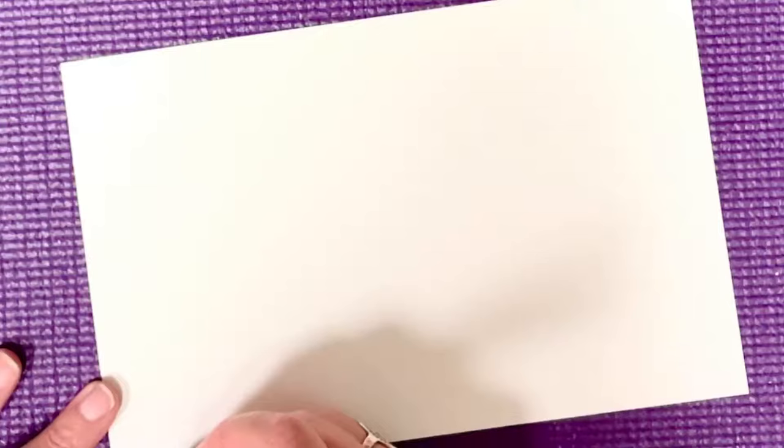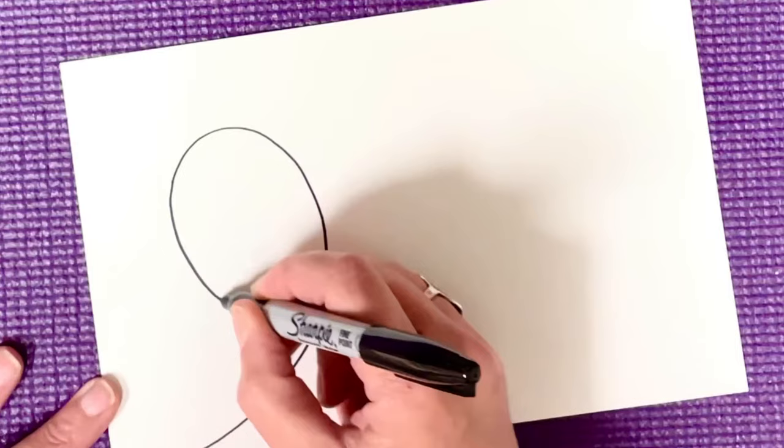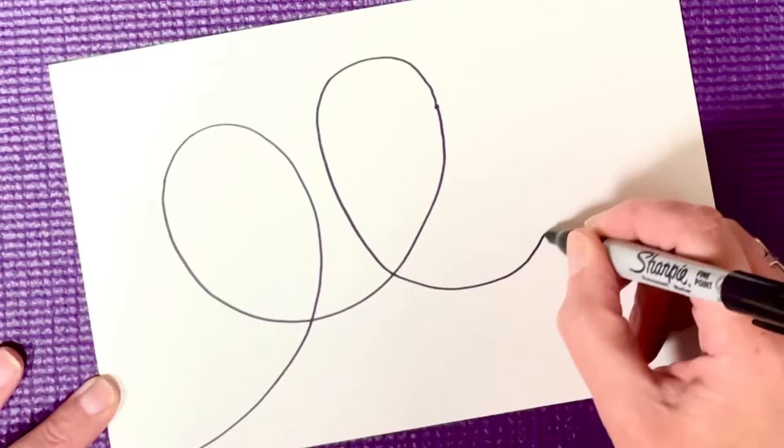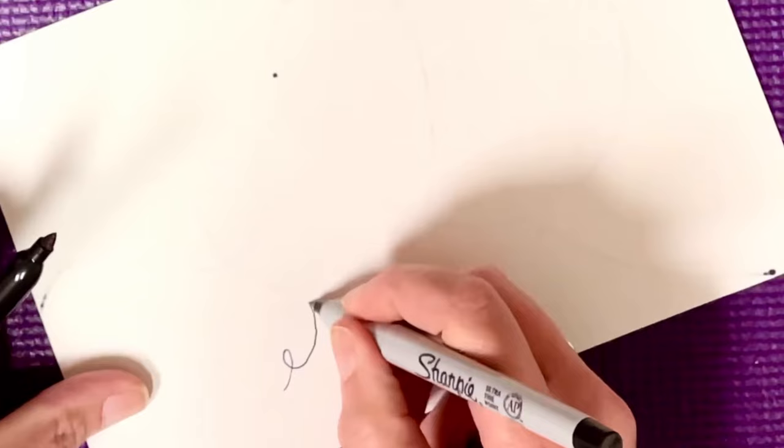To begin this project, students draw a random looping line across their page for about three to four seconds. One thing I learned is to really push them to make big shapes. A lot of them wanted to make these tiny tight little shapes.